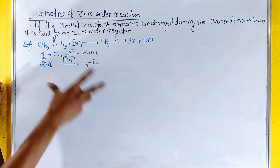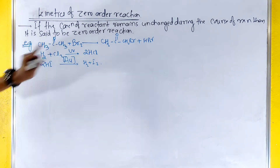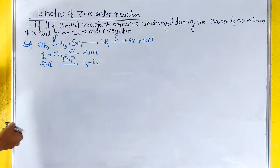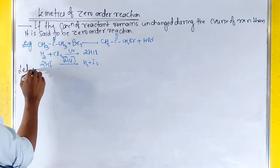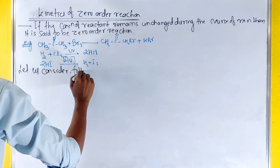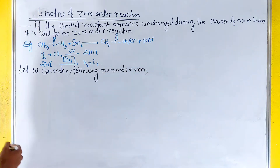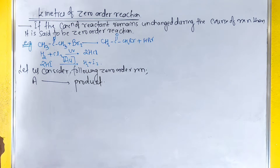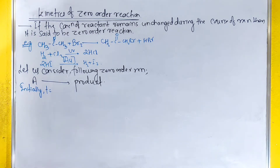If the concentration of reactants remains unchanged — they can change in concentration despite the reactions — these are zero-order reactions. For example, CH3Cl dissociation under UV light. Let us consider the following zero-order reaction.